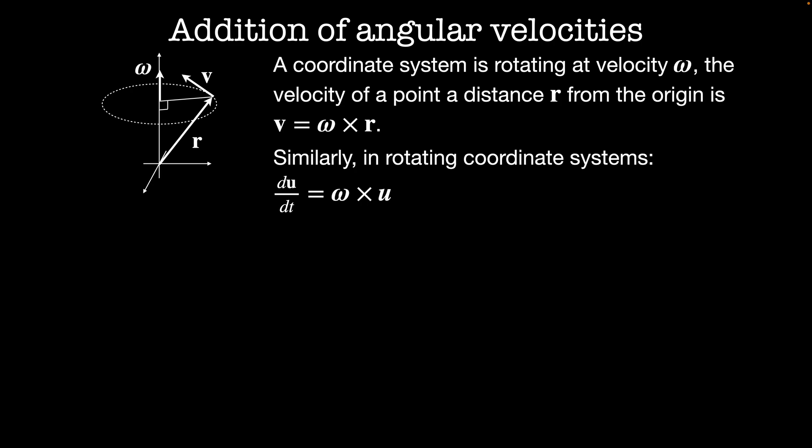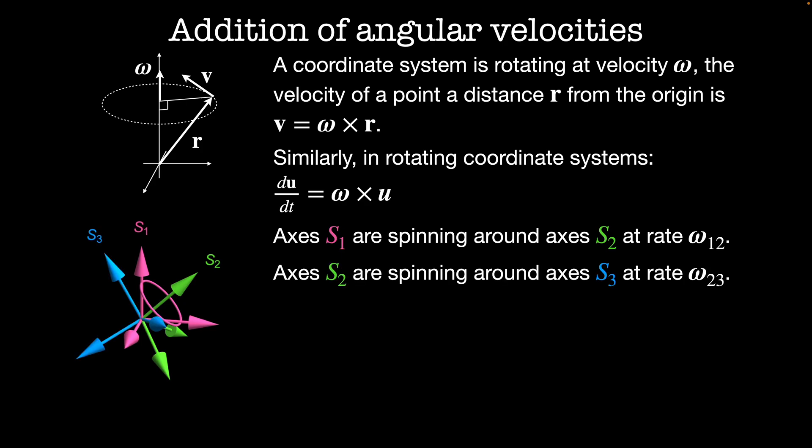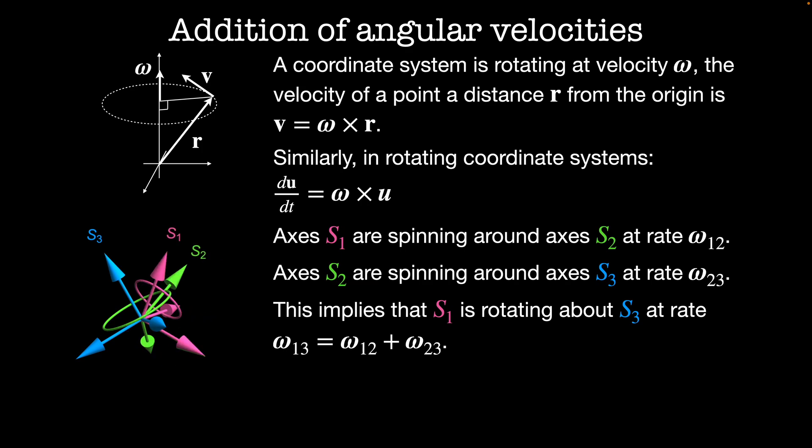Let's have a look at what happens when we have several coordinate systems rotating together. We'll start with coordinate system s1. Coordinate system s1 is rotating about coordinate system s2 at rate omega 12. Coordinate system 2 is rotating about coordinate system s3 at rate omega 23. This implies that coordinate system s1 is rotating about coordinate system 3 at the combined rate omega 13 equals omega 12 plus omega 23.